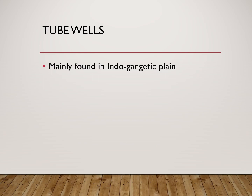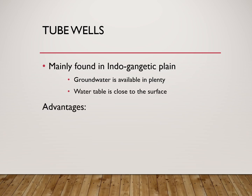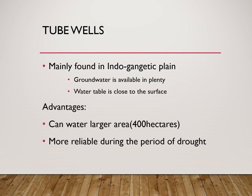In India, tube wells are mostly found in the Indo-Gangetic Plain because the groundwater table is high. Advantages of tube wells: they can irrigate very large areas as water can be pumped with greater force. During drought, when rivers become dry or lakes become dry, groundwater can be used for irrigation. For farmers with small land holdings, tube wells are well suited as they occupy very little space.